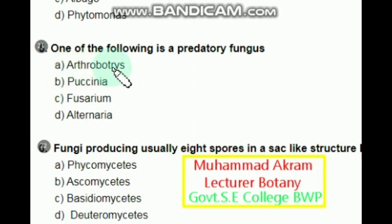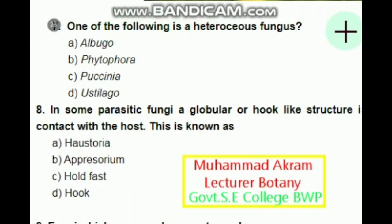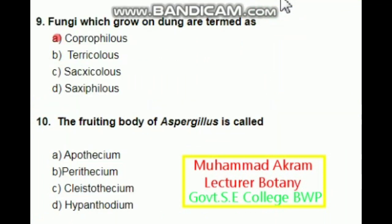Fungi producing spores in a sac-like structure — this is called Ascomycotina. One of the following is a heteroecious fungus, meaning it completes its life cycle on different hosts. The right option is Puccinia.